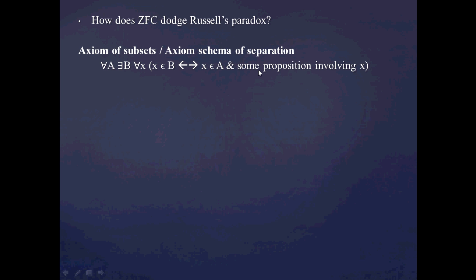So notice what this axiom does. It says that two things have to be true. That proposition involving x has to be true, and that x has to be in some other set A, which is assumed to exist. So basically what you're doing is you're saying that another set A has to first exist, and then we're going to consider those objects within B that satisfy that proposition. So basically you're not allowed to just plop in the proposition x is not an x into this right-hand side anymore.